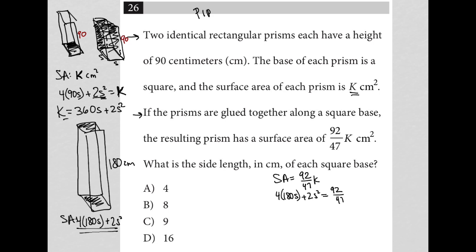So that's really equal to 92 over 47K. But I also know that K up here is equal to 360s plus 2s squared. So now I am left with just an equation that only has s involved. The question says, what is the side length? Perfect. So I'm actually trying to solve for s. What is the side length in centimeters of each square base? So I just have to simplify this. So let's distribute this 4 times 180. We get 720. So this becomes 720s plus 2s squared.